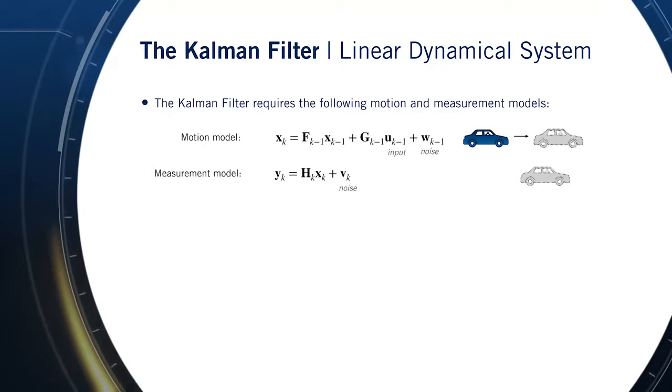Next, we will also need to define a linear measurement model. And finally, we'll need a measurement noise, as before, and a process noise that governs how certain we are that our linear dynamical system is actually correct, or equivalently, how uncertain we are about the effects of our control inputs.